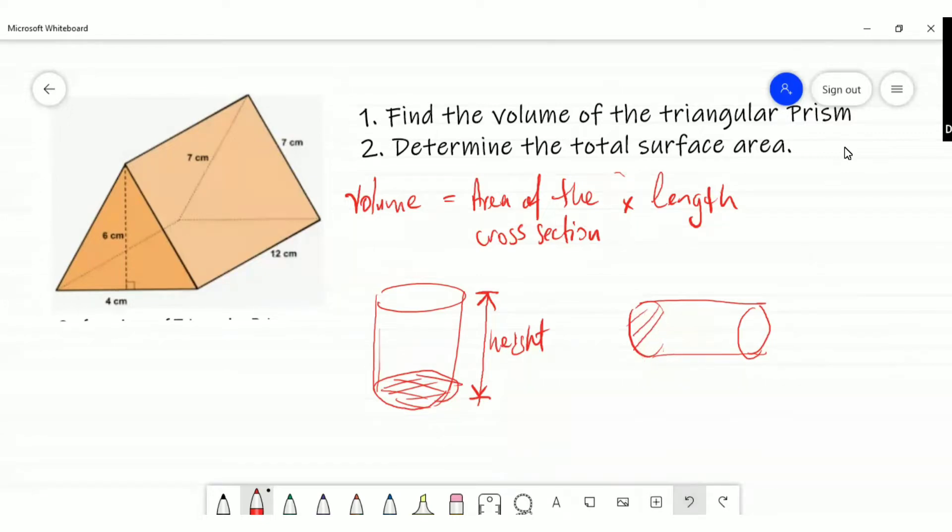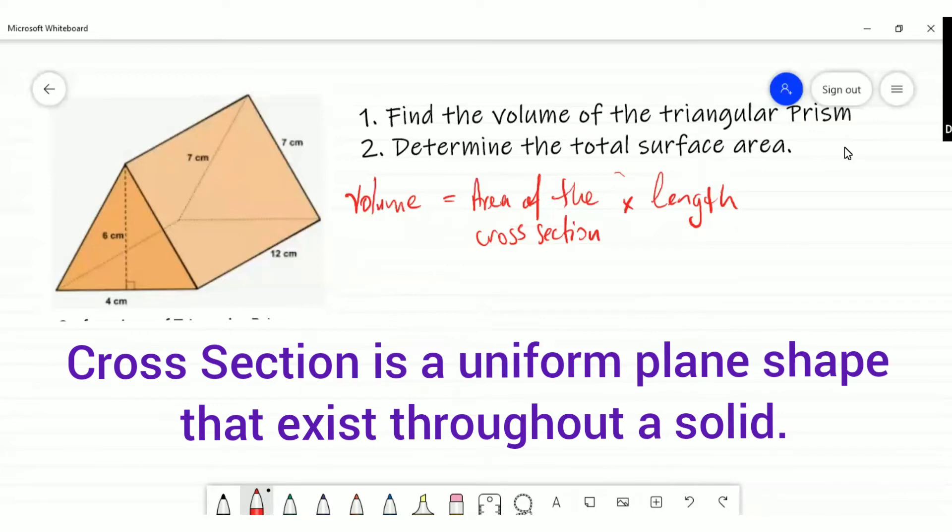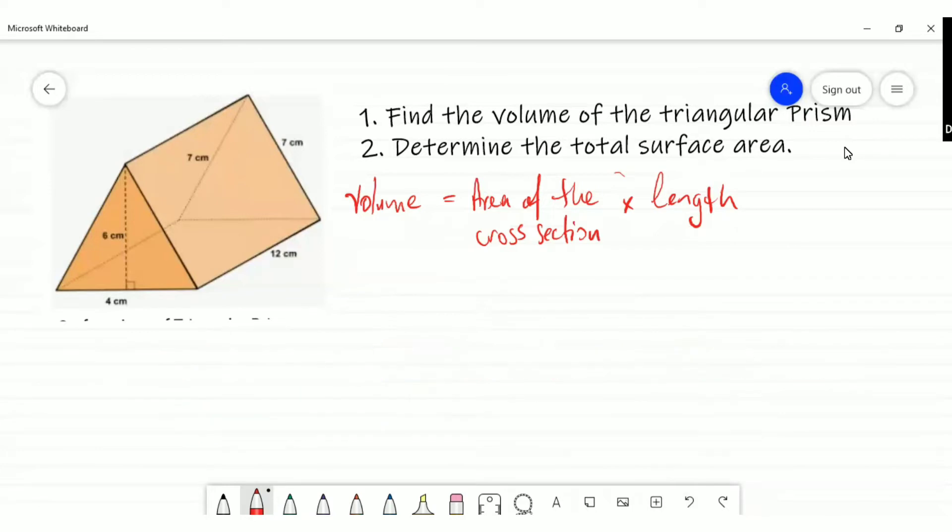In the context of the triangular prism that I have, it's basically area of the cross section times the length. Now let's see what the cross section is. The cross section is a uniform shape that exists throughout. If we're looking carefully, you would notice that you're seeing a triangle, that triangular shape at the back here.